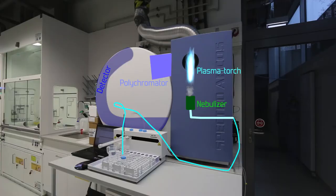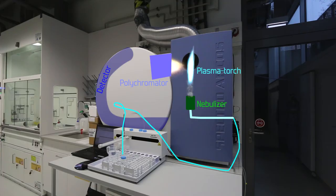The sample is directed into the plasma flame where it's atomized, and the emitted light is directed through a polychromator to the detector. The information is then processed by computer software.